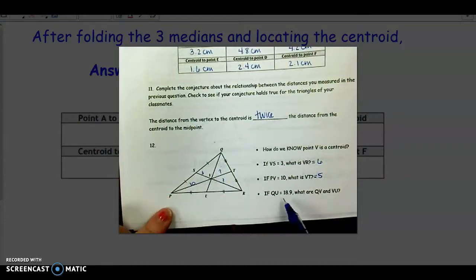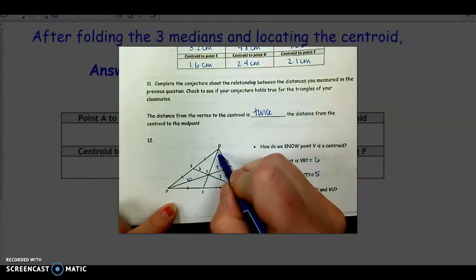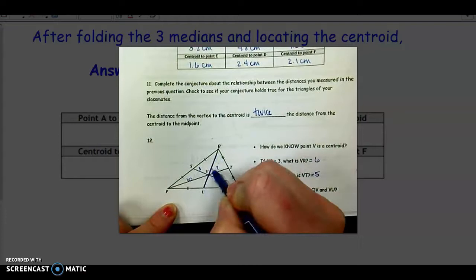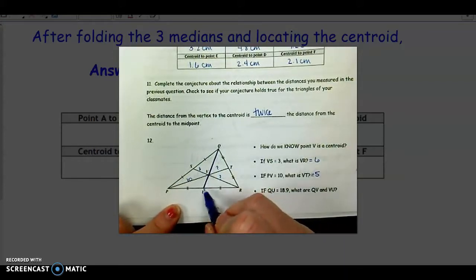Now this is probably the most difficult of the three. We're given Q to U. So we're given the whole length of the median, not one of its parts. We're asked for each one of the parts.